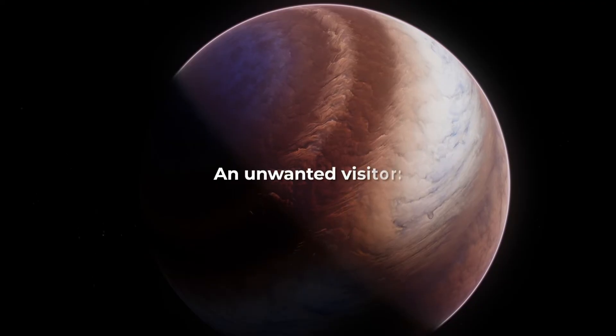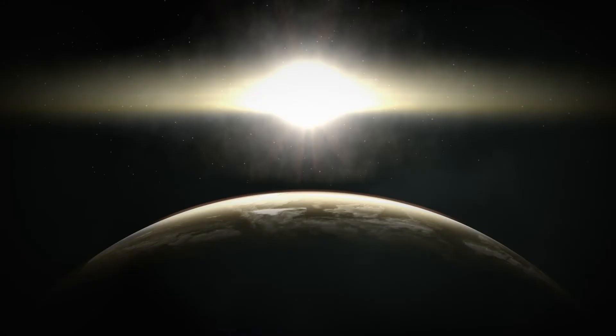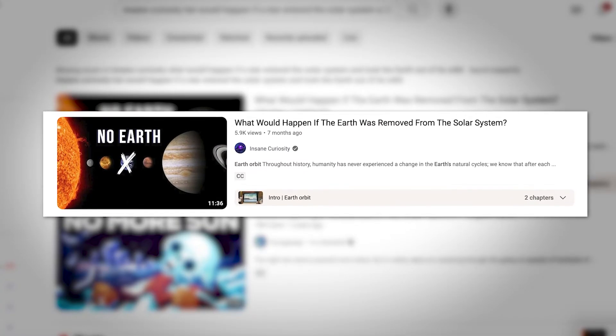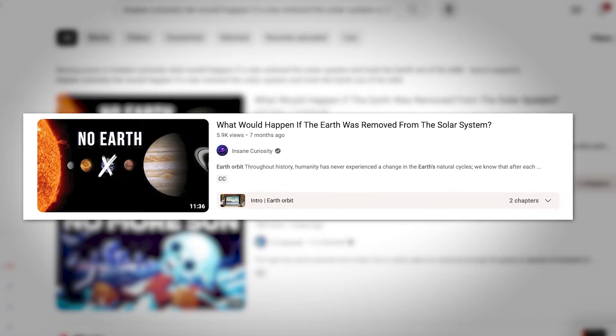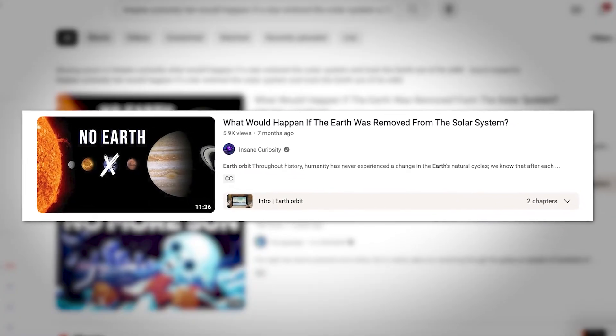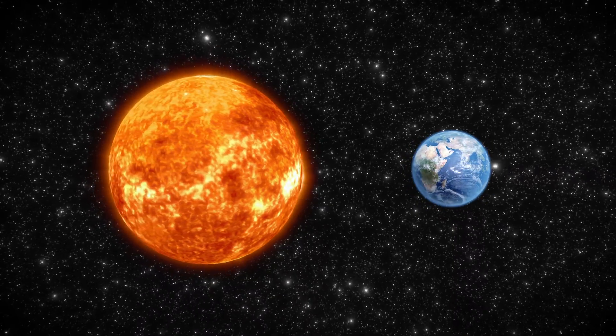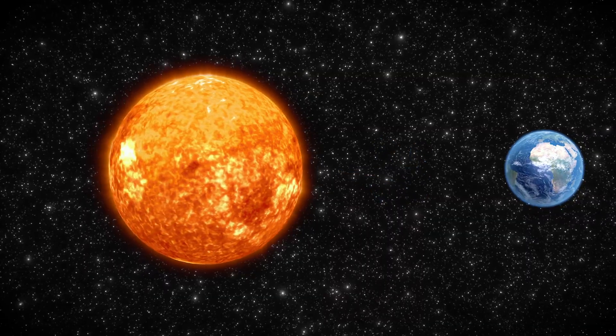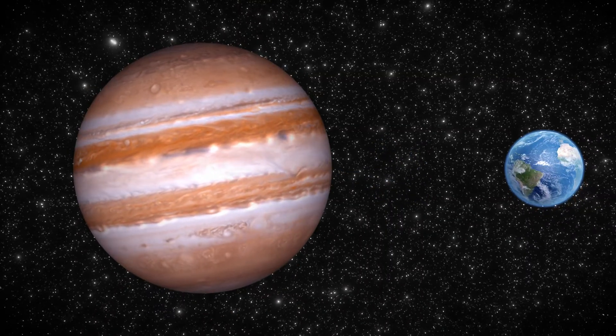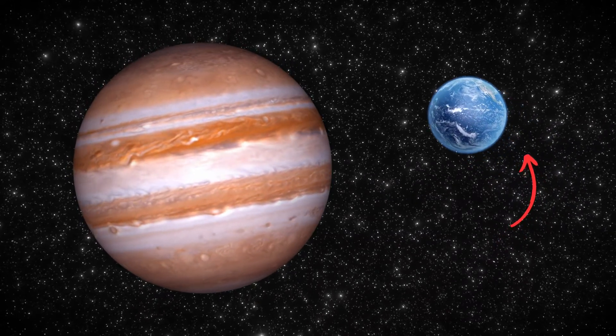An unwanted visitor. If an object from the interstellar medium, such as a star or a brown dwarf, were to get a little closer to our solar system or even manage to enter the domain of the Sun entirely, it could disturb the orbits of the planets. In a previous video, we talked about what would happen if a star entered the solar system and took the Earth out of its orbit. We explained that a star could push Earth out of the solar system. But if instead of a star it was a smaller object, like a brown dwarf or gas giant planet like Jupiter, then instead of pulling the planets out of the solar system, it would only move their orbits.